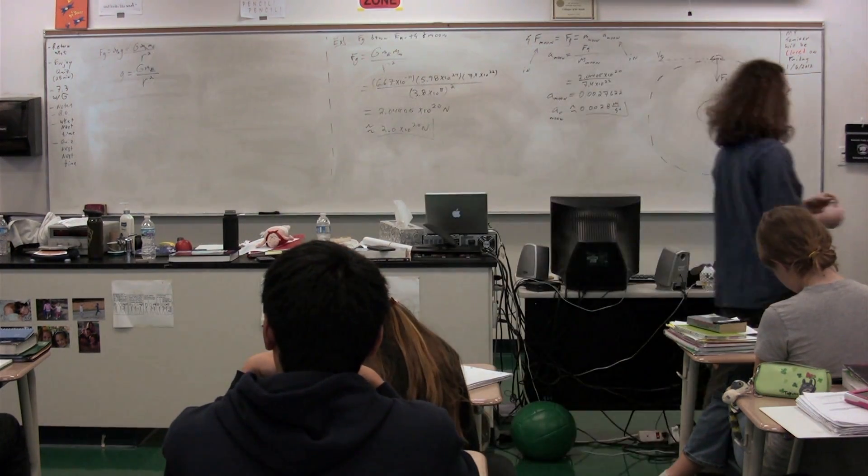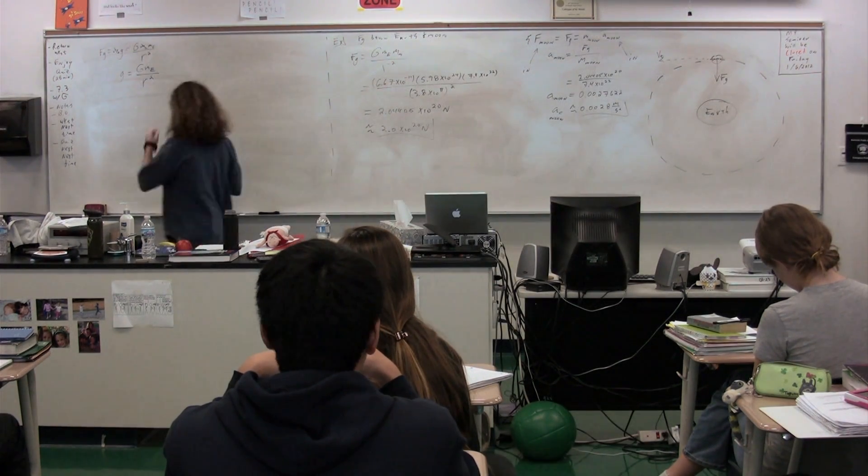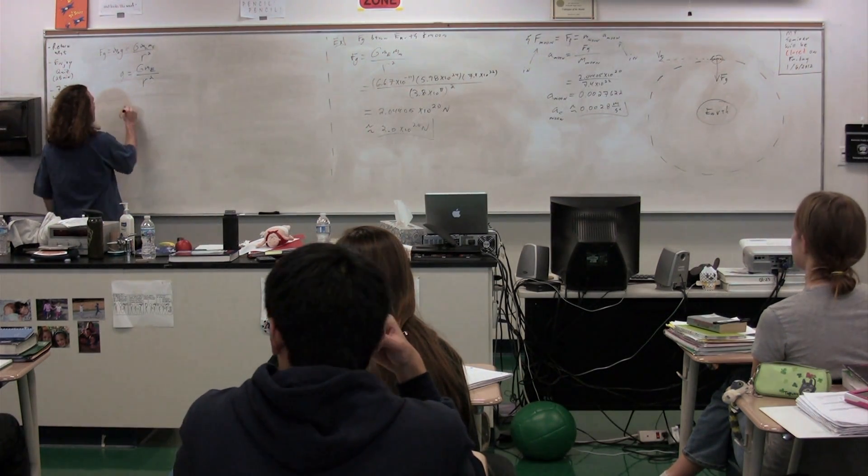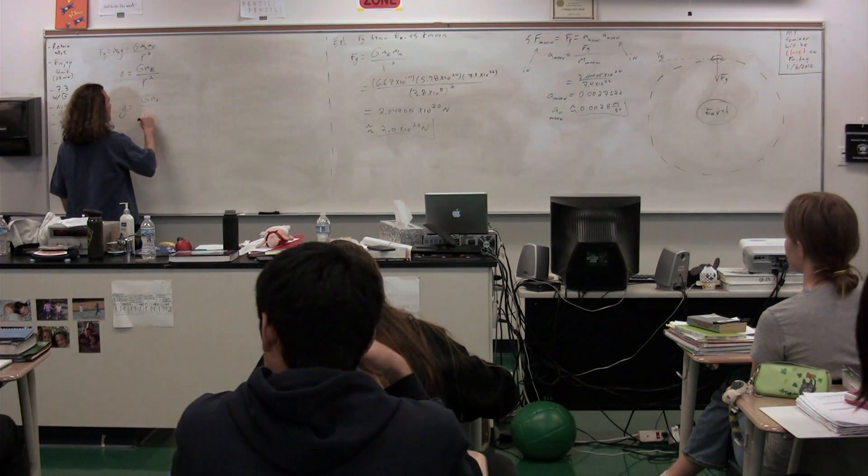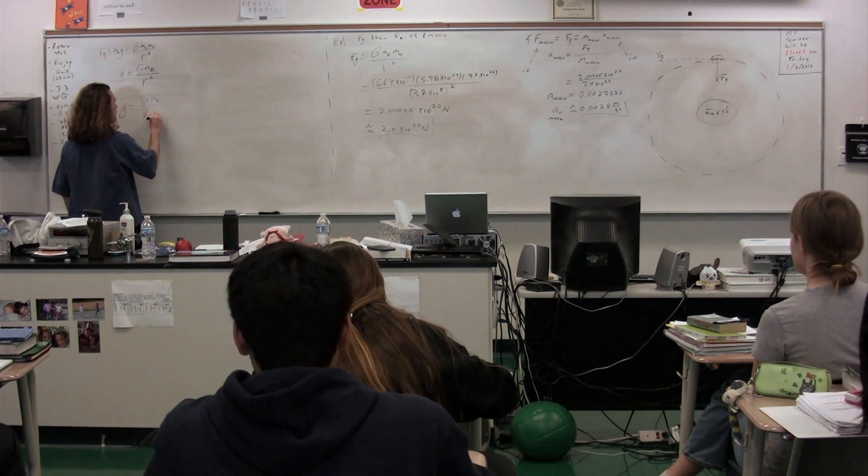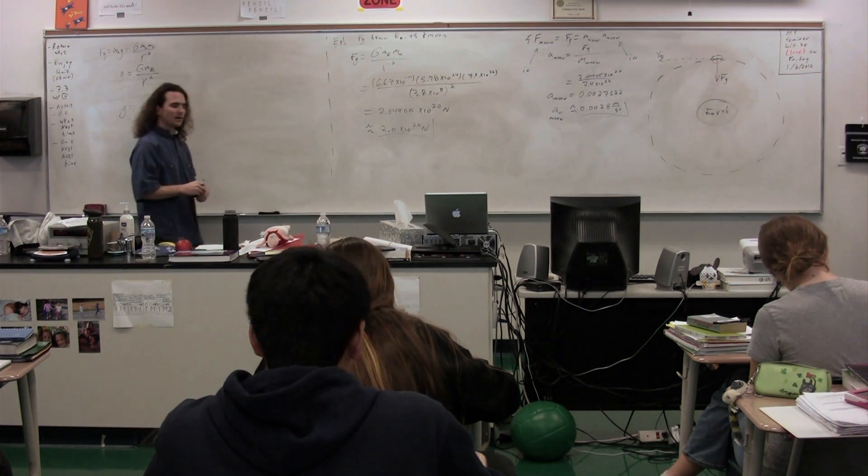So notice that that is going to be the radius of the Earth plus the altitude of the object. So big G, the mass of the Earth, divided by the radius of the Earth plus the altitude of the object, and that's what we're going to square.